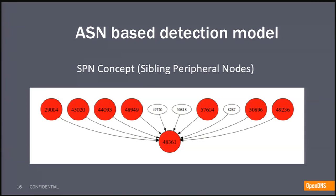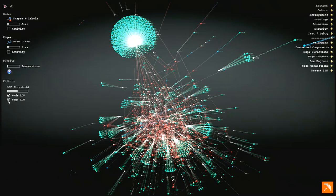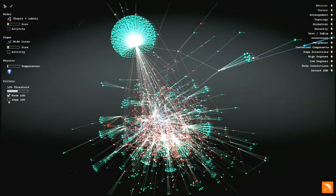Once we build the graph, we propose a detection model based on ASN graph exploration, which we call the sibling peripheral nodes concept. In this example, ASN 48361 is an upstream provider for all of the ASNs at the top. They are all siblings because they share the same parent, and they are peripheral because they have no downstream peers — they're on the outskirts of the Internet. This is shown in our open-sourced tool called Open Graffiti, which we released during Black Hat this year. It allows you to load the entire BGP data to build the ASN graph, apply the SPN model, and explore shady neighborhoods of the Internet.